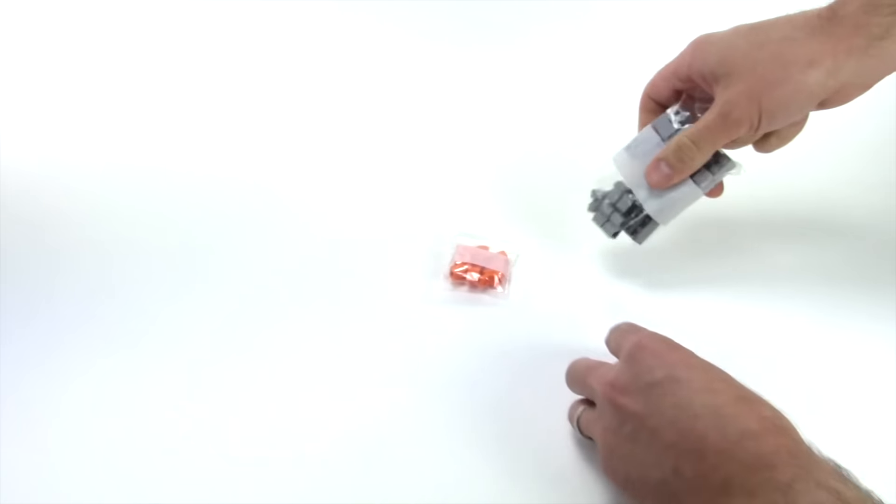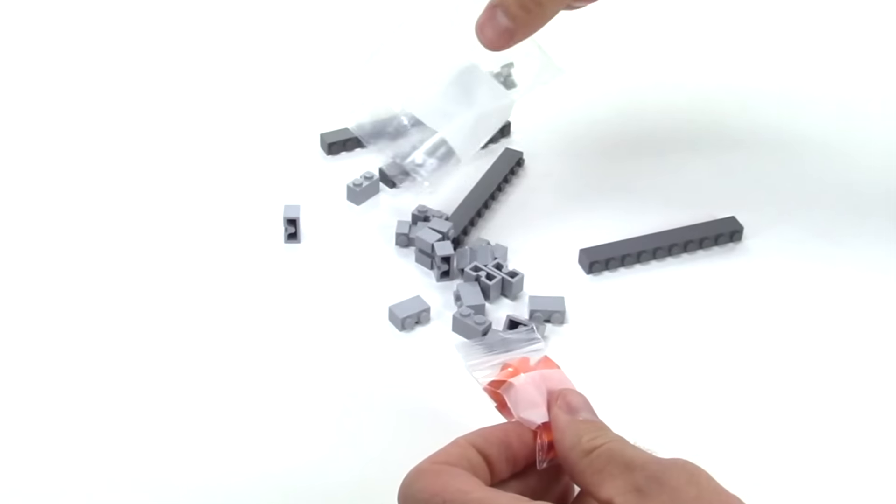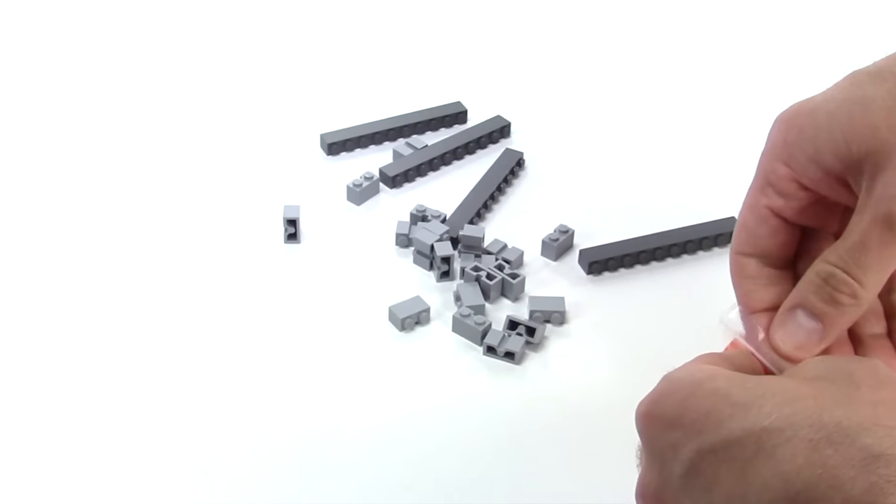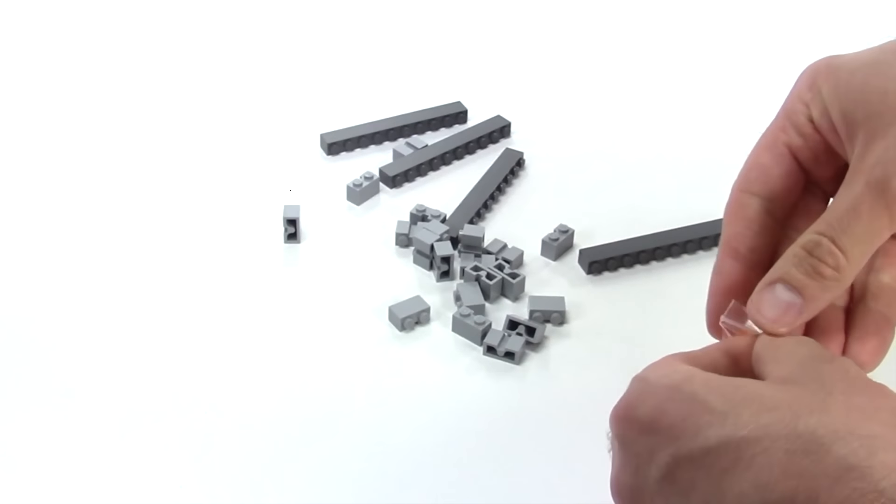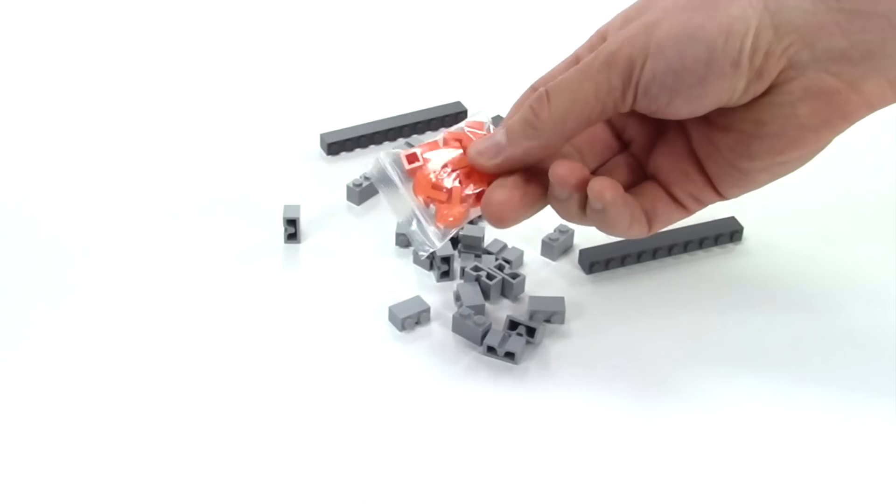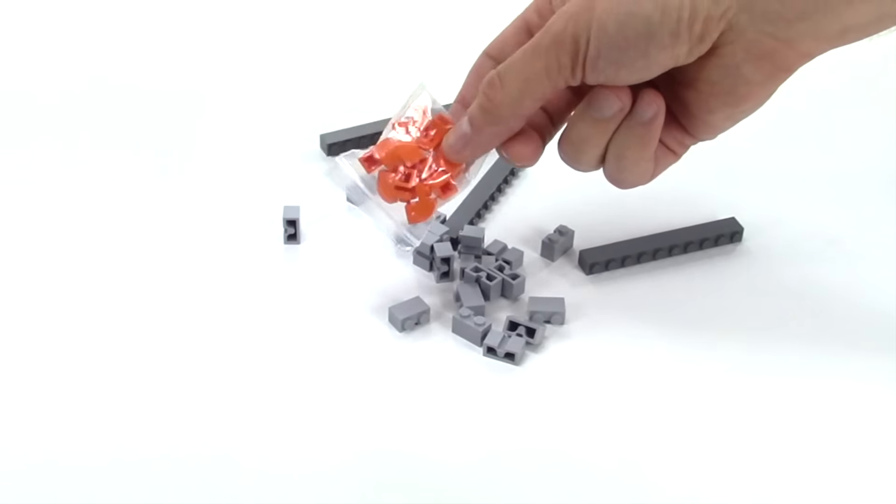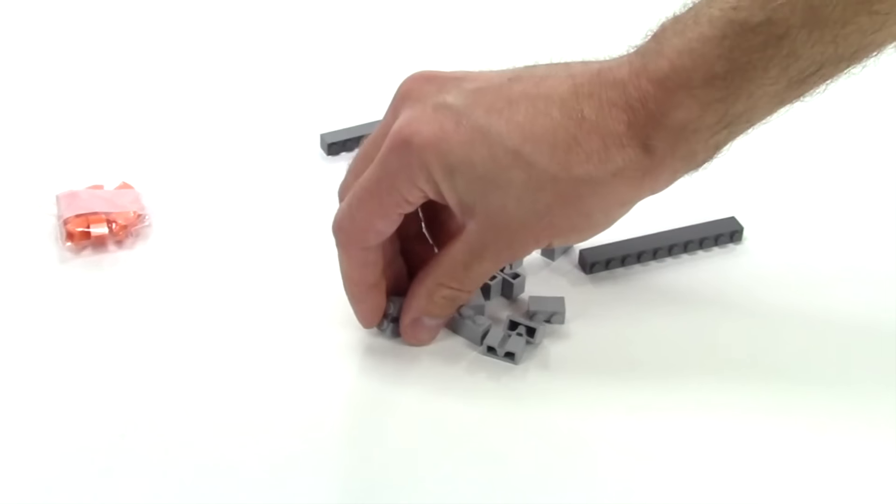So here we go. We got some dark bluish gray, some light bluish gray, and some orange curved slopes. Now I actually don't think I need these anymore so I'll save those for another project, but these kinds of pieces are for a top secret project I'm working on.